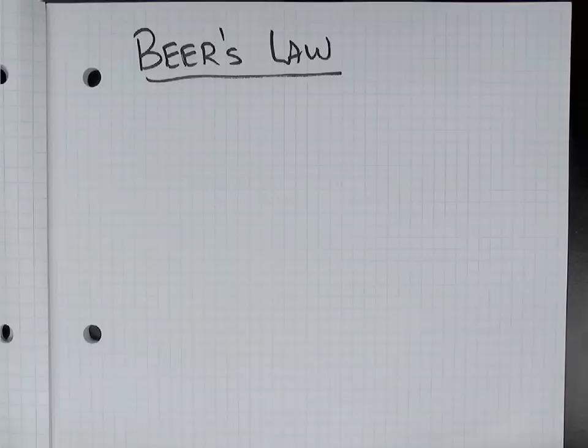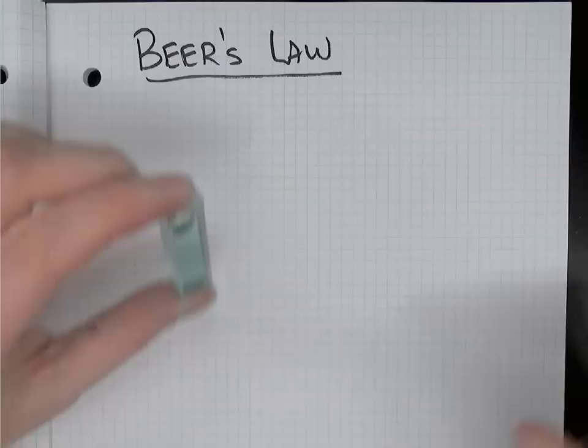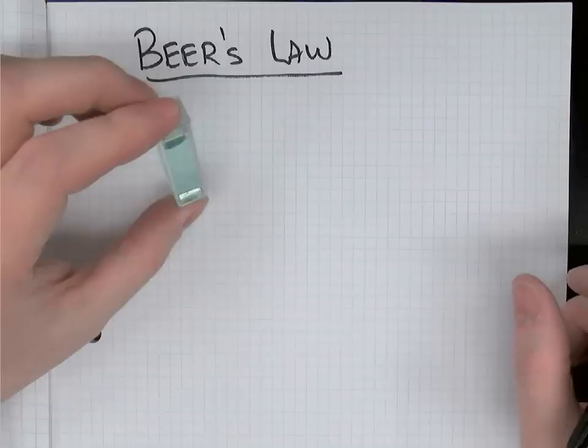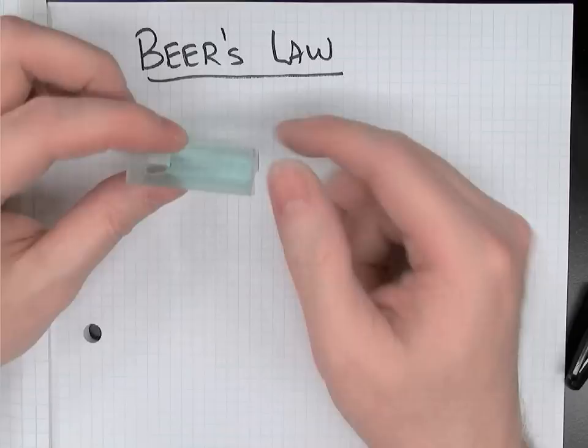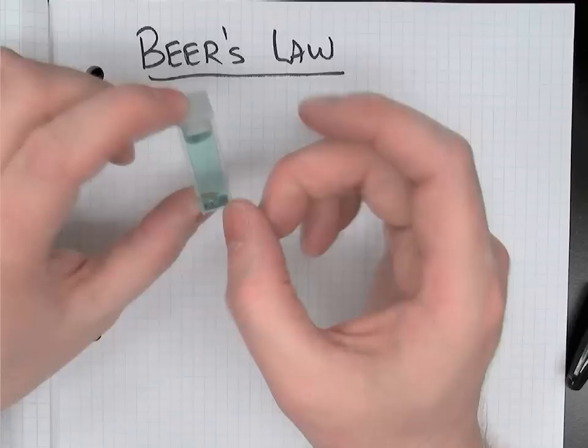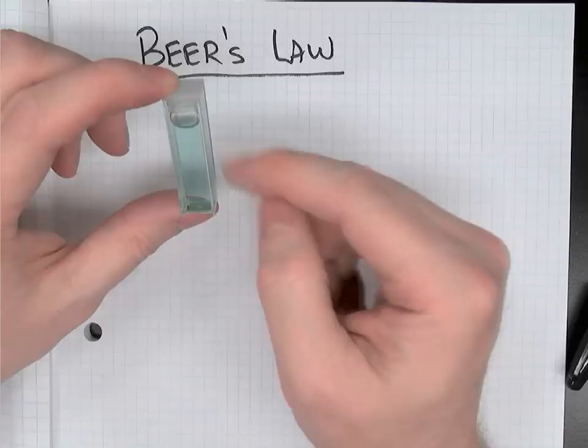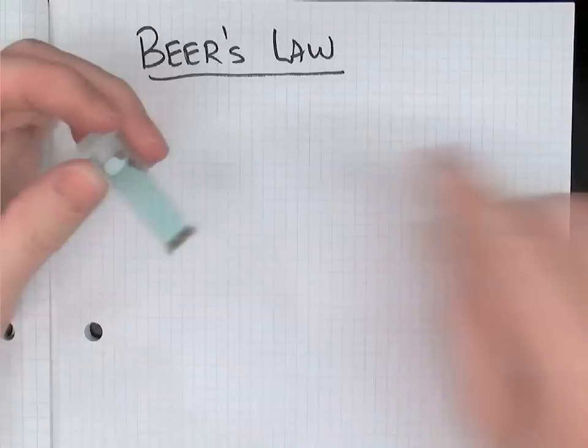Beer's Law applies when you're looking at a colored solution and you're wondering about the concentration of that solution. I've got here a cuvette, a little plastic cuvette, sort of like a test tube. It has ridges on two sides that are opposite, where I can touch and hold, and then there are clear sides where light will pass through. This cuvette has a green colored solution in it — it's an unknown metal cation that gives the solution a green color when dissolved.